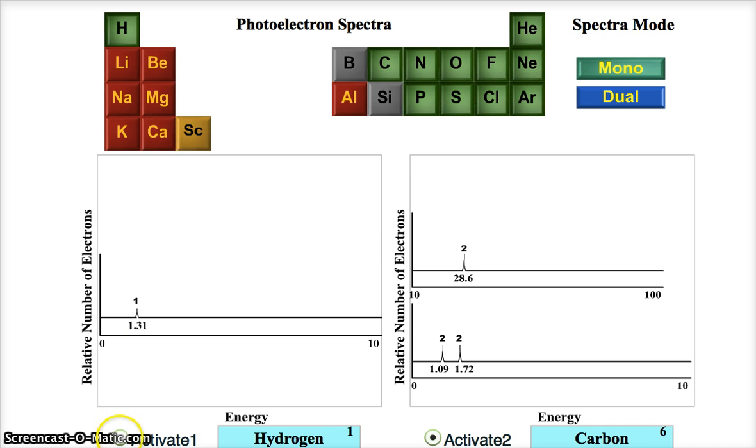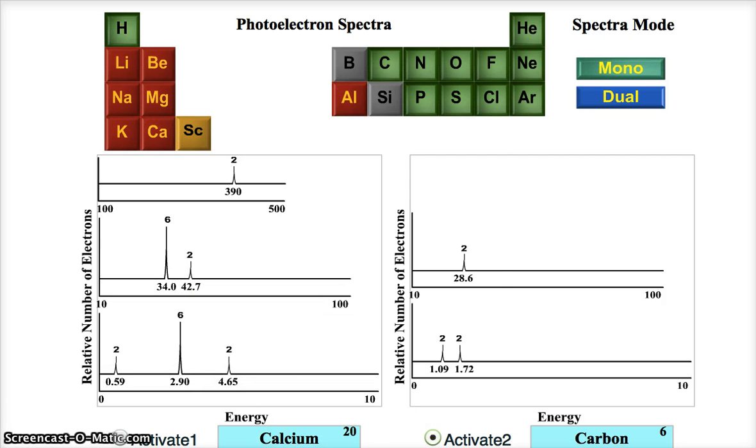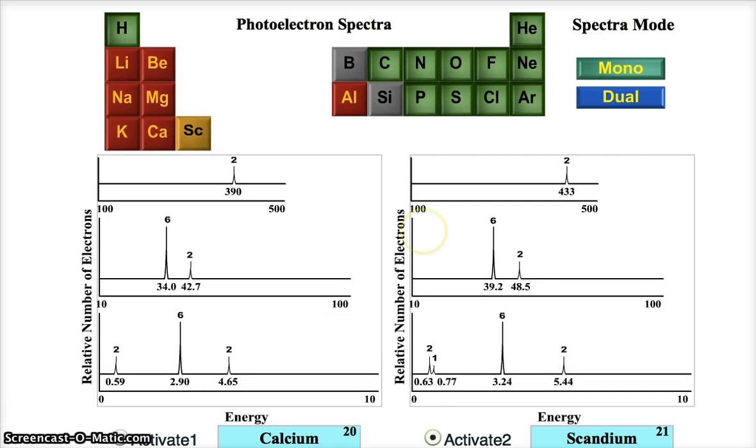Let me go to calcium over here. And scandium. The reason scandium is here, I think, is kind of important. Then I'll let you be. But okay. Calcium. Again, 390. That's 1s2. Then we have at 42.7, 2s2. 2p6. 3s2 is at 4.65. 3p6 is at 2.9. 4s2 is at 0.59.